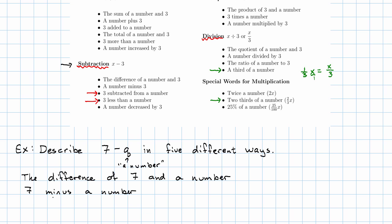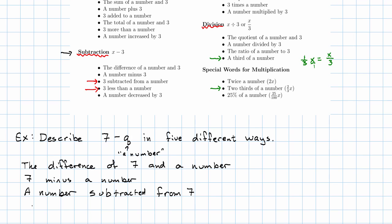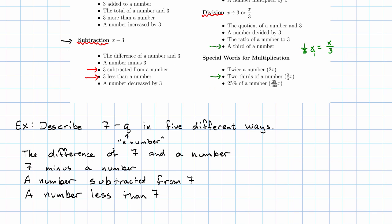Now this one's going to reverse the order. So a number subtracted from seven. This less than phrasing again reverses it, a number less than seven. And now this last description is in the right order again, seven decreased by a number.